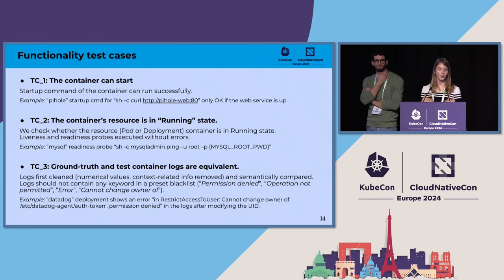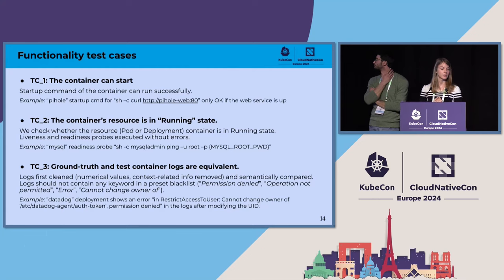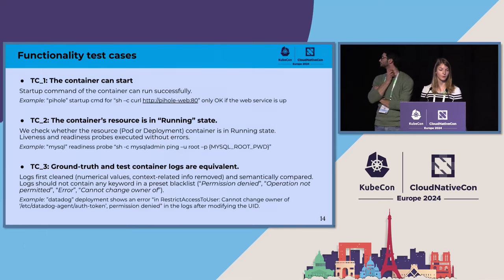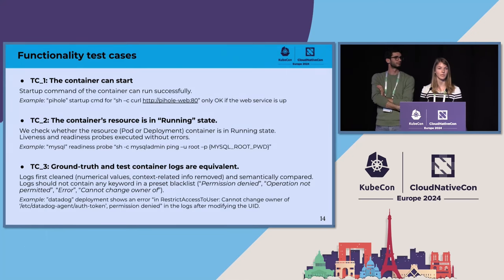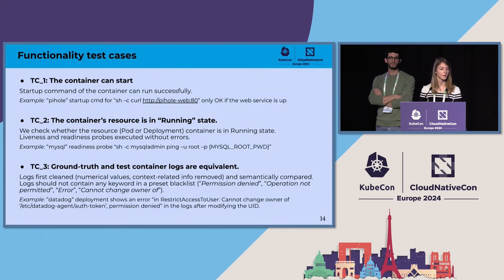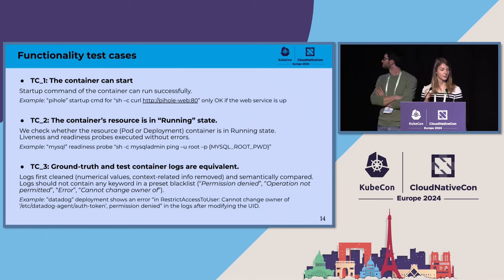If TC1 is okay, I go to TC2 and check that the container resource is in running state — specifically looking at the pod or deployment container to verify it is in running state. We especially look at liveness and readiness probes, which are very useful for testing basic functionality. In most cases they are already defined in the Helm chart. For example, the MySQL Helm chart had a readiness probe using the ping functionality from the MySQL admin executable.